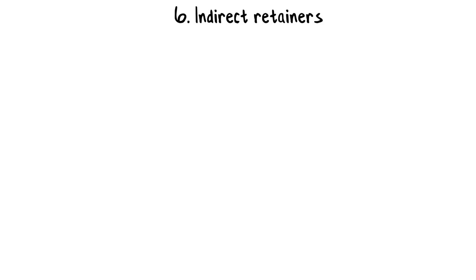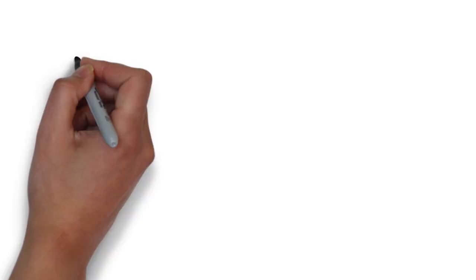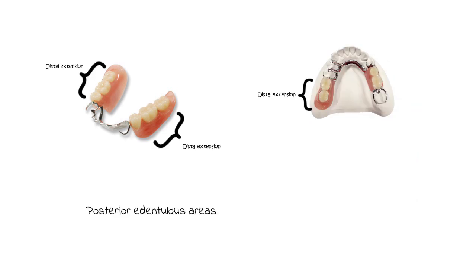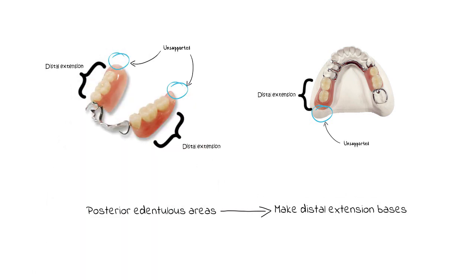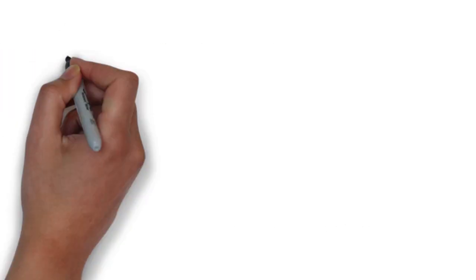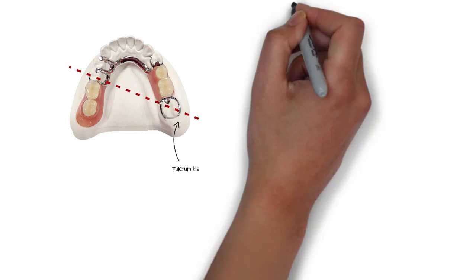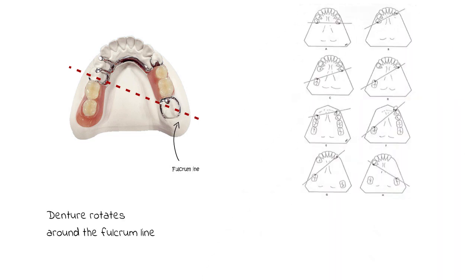The next are the indirect retainers. An indirect retainer is not a specific component — it is rather a group of different components. Their importance lies when making a denture with distal extensions, such as Kennedy's Class 1 and Class 2 dentures, which have posterior edentulous areas. In these cases, there is a high chance of dislodgement because the denture is supported only on one side by the abutment teeth, and the distal extensions tend to dislodge and rotate the denture around the fulcrum line — the axis around which the denture rotates when subjected to forces directing it away from the ridge.